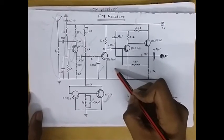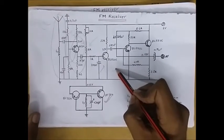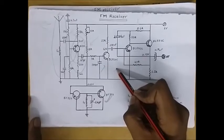IF stage filters the signal from the mixer further. As now the signal is very faint, it amplifies it further.